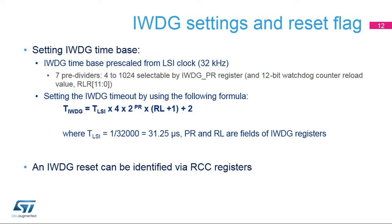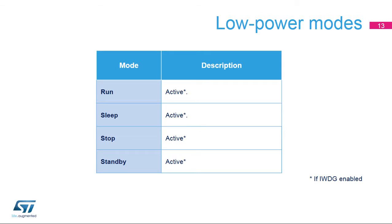The IWDG time base is prescaled from the LSI clock at 32 kHz. The IWDG PR prescaler register can divide the LSI clock frequency by up to 4. The watchdog counter reload value is a 12-bit value written in the IWDG RLR register. The independent watchdog timeout is based on the LSI period, its prescaler, and the selected counter reload value, offering a wide range of timeout values. The reset and clock controller, or RCC, provides registers indicating the source of the reset, allowing the application to check if a reset was caused by the independent watchdog. The IWDG can be active in all modes.